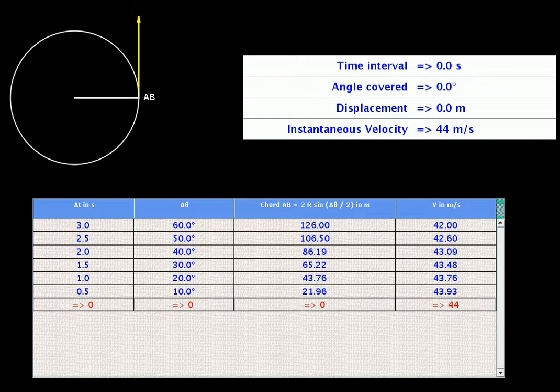As duration gets smaller, displacement also gets smaller and the ratio of the displacement to time approaches a certain value. By considering a very small duration, we get what we can claim as the instantaneous velocity.